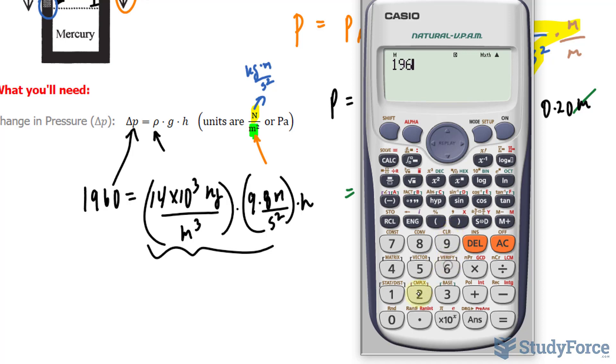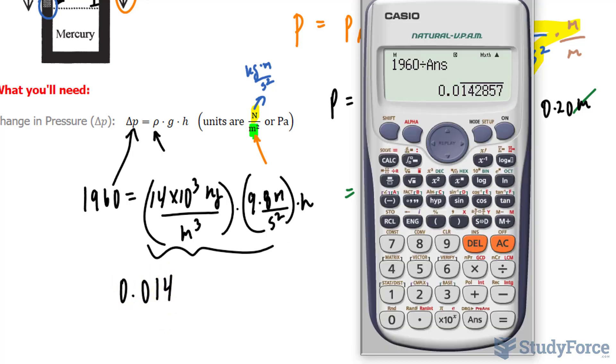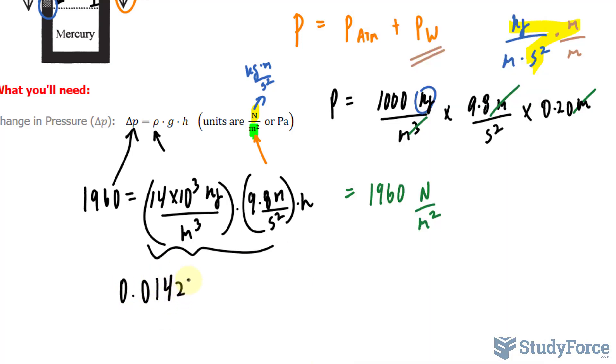This leads us to 1,960 divided by the answer that our calculator gave us previously, and we get a height of 0.01428, and that's in meters.